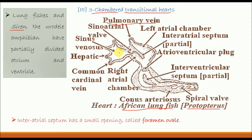Lungfishes and siren have another peculiarity: they lack an atrioventricular valve. Actually, they have an atrioventricular plug. This atrioventricular plug is located at the aperture of the atrioventricular opening. This means the atrioventricular aperture is guarded by an atrioventricular plug and not by an atrioventricular valve, in the case of lungfishes and urodele amphibians.